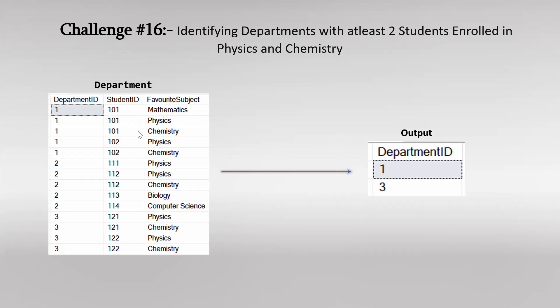By using this data we have to find out for which department at least two students have enrolled in physics and chemistry. If we observe this input data we will find that department ID 1 and department ID 3 have at least two students who are enrolled in physics and chemistry. Let us discuss how we are achieving this output logically as well as by implementing an SQL query.